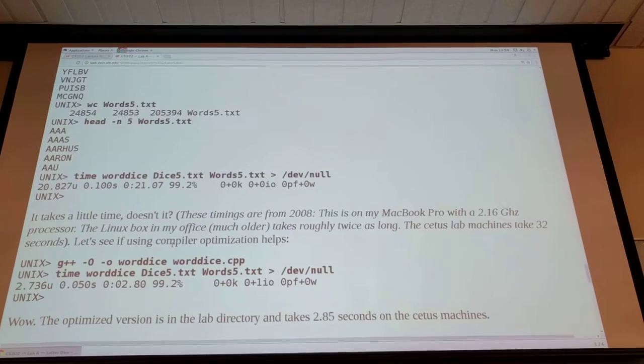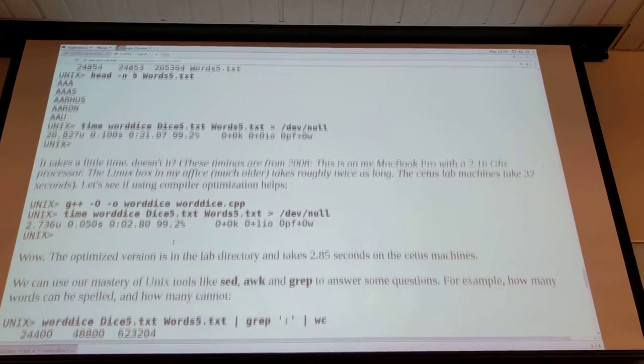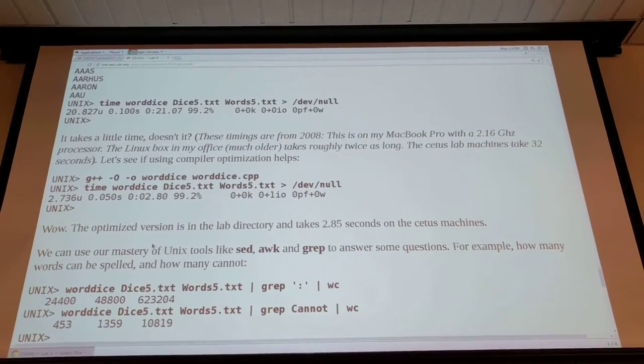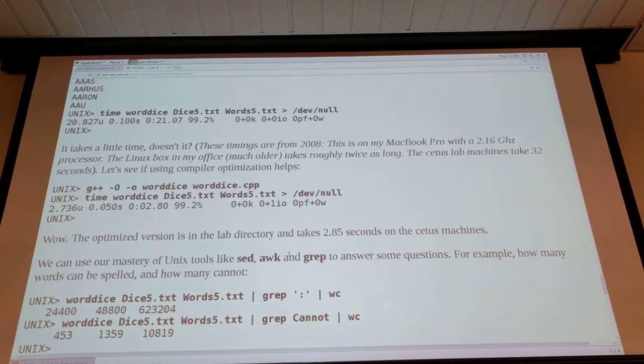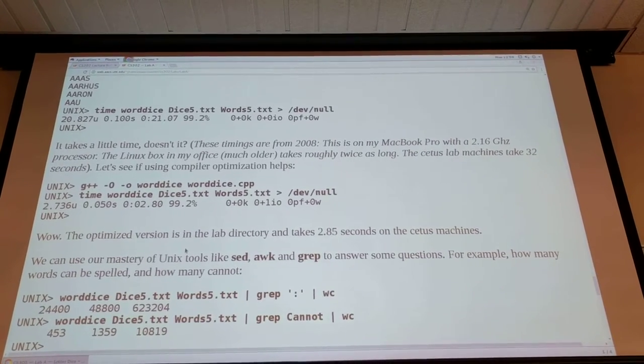And then he has some time information about how long his program took. And then if you run it with the dash O2 for optimization, it will speed up the execution time because it optimizes the code.